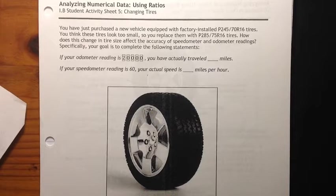It says you have just purchased a new vehicle equipped with factory installed P245/70R16 tires. You think these tires look too small, so you replaced them with P285/75R16 tires. How does this change in tire size affect the accuracy of your speedometer and odometer readings?